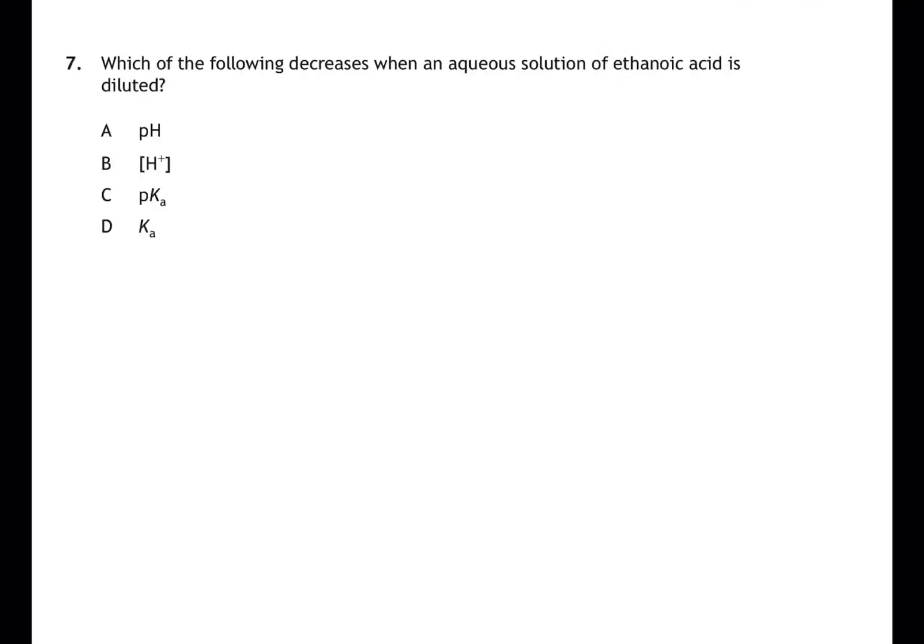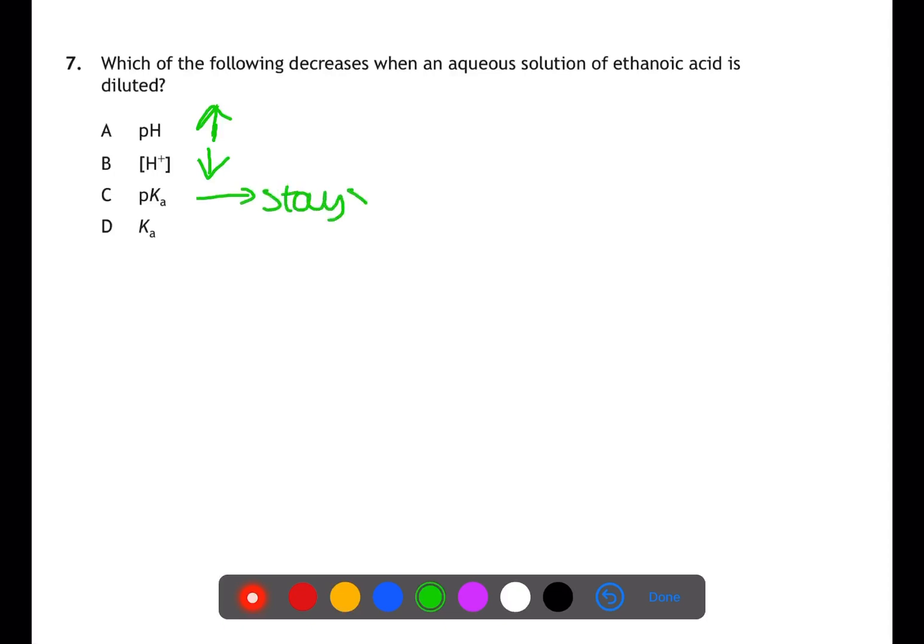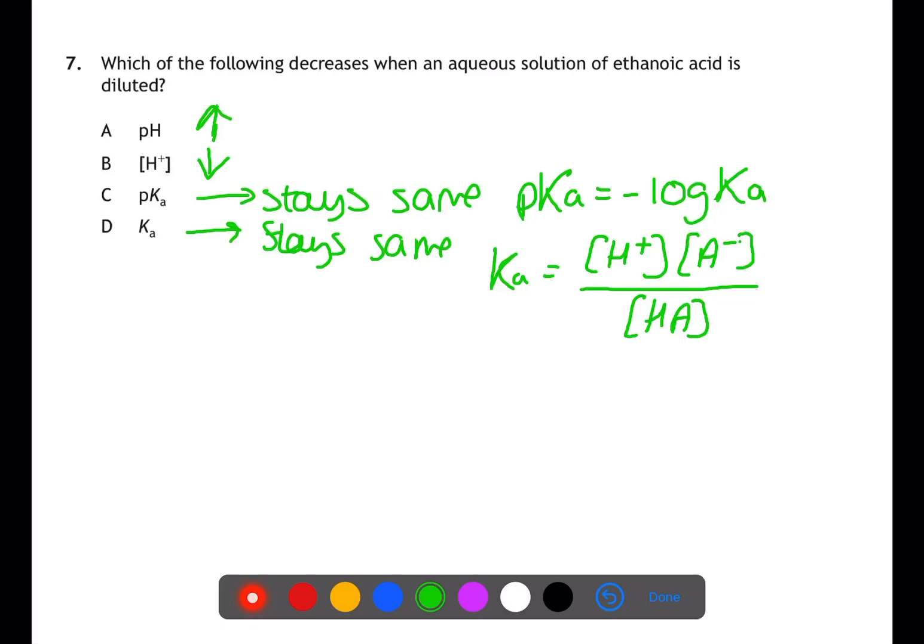Question seven requires knowledge of weak acids. When you dilute a weak acid, the pH will increase towards seven as the concentration of the hydrogen ions will decrease. The pKa will stay the same as this is pKa equals minus log Ka and is based on the equilibrium constant for the dissociation of the acid. Ka, the equilibrium constant for the dissociation of the acid, will stay the same as this is the concentration of the hydrogen ions multiplied by the concentration of the anions divided by the concentration of the original acid. This is just a ratio, so by diluting the acid, you do not change the ratio. Therefore B is the answer.